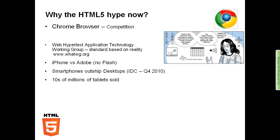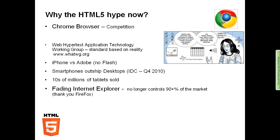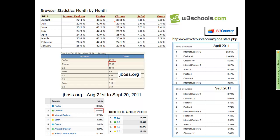There are tens of millions of tablets being sold. One thing that's very critical is that Internet Explorer is fading fast — it no longer controls 90% of the market, primarily because Firefox took a bite out of the IE market, and Chrome has been finishing it off. All of us developers are now ready to do something new, and that's another key reason why HTML5 has so much hype right now, as evidenced by the number of people who have joined us today.